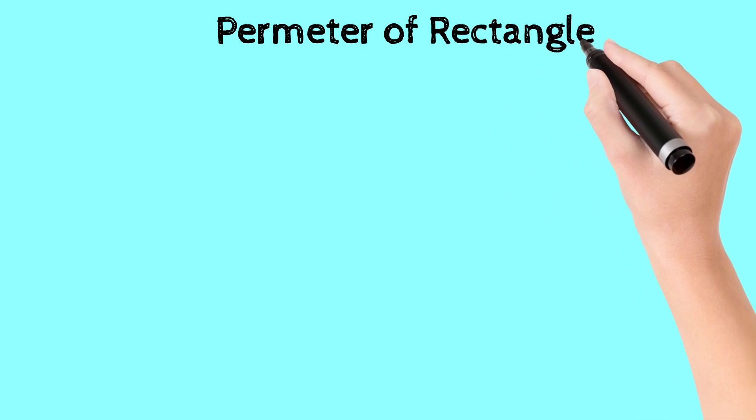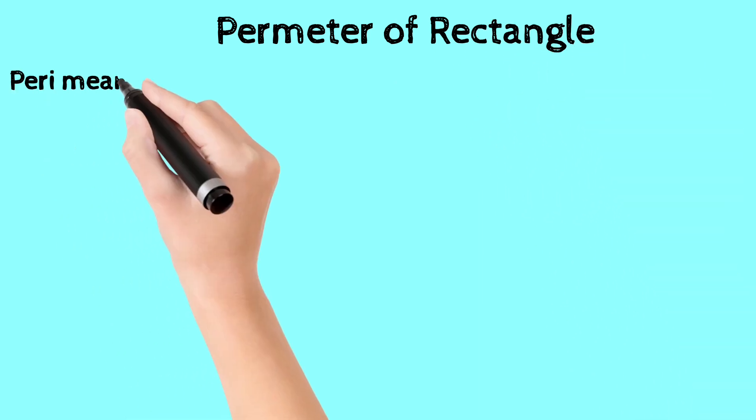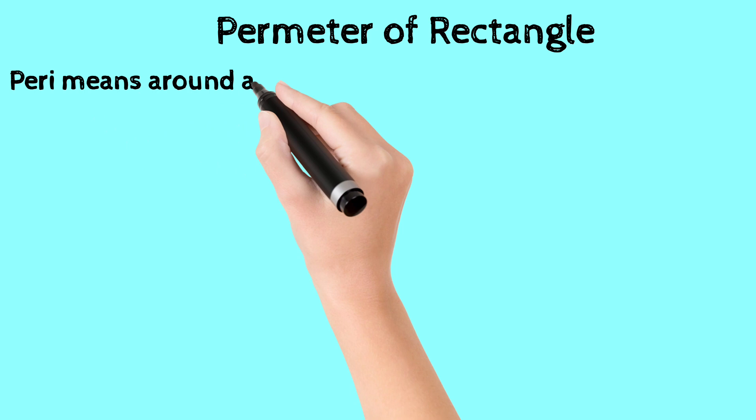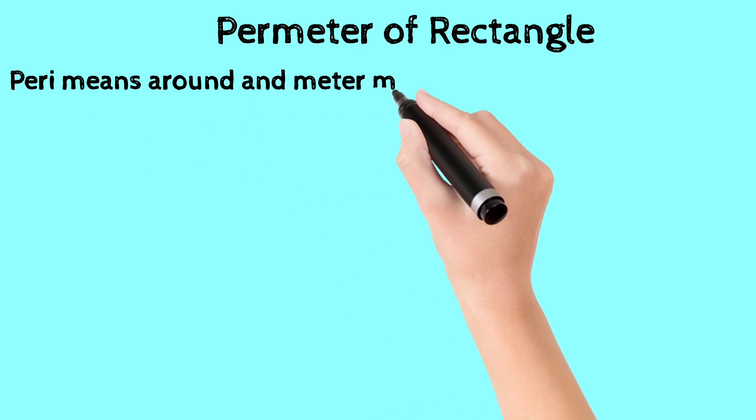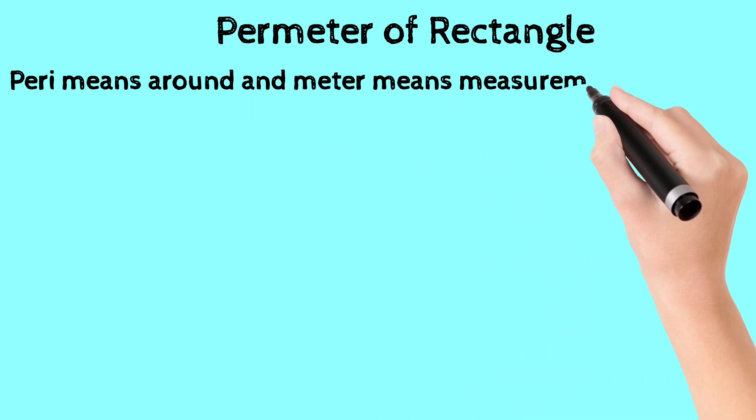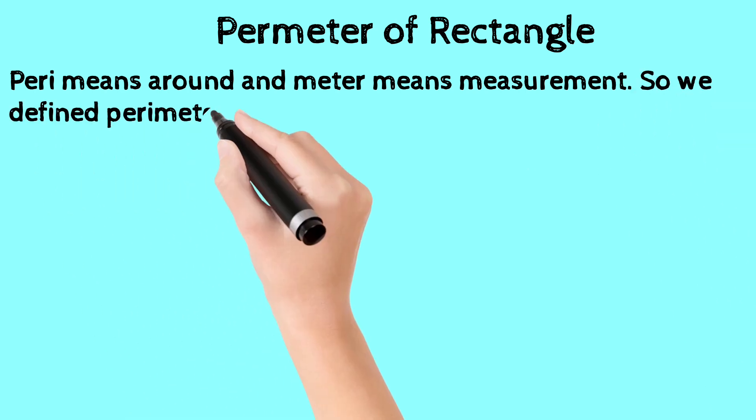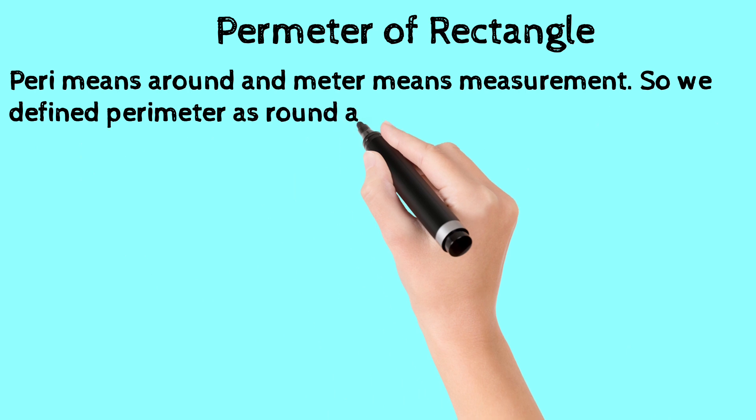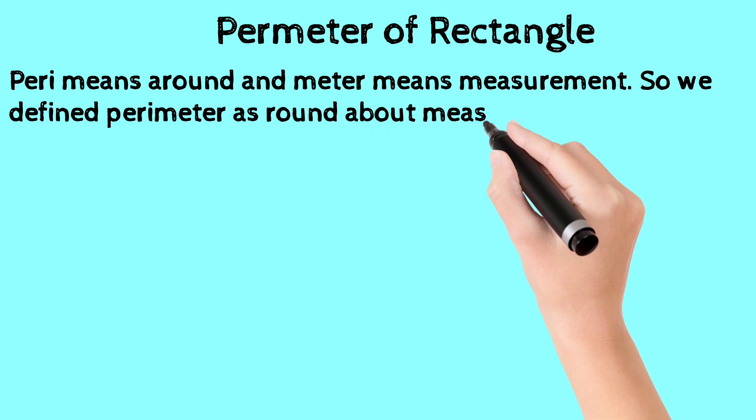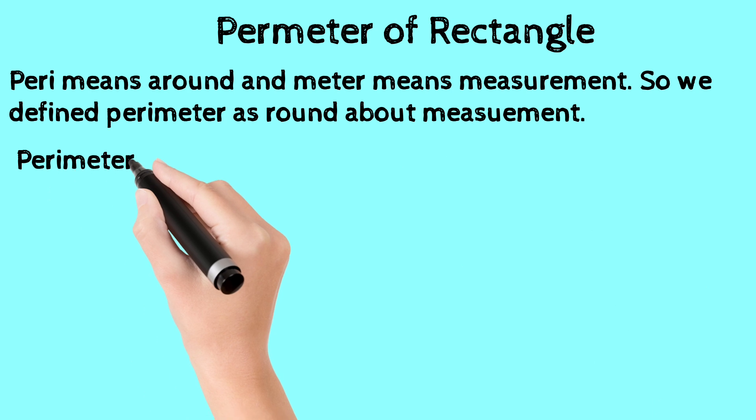Now we find the perimeter of a rectangle. First, see its definition. Peri means around and meter means measurement. So we define perimeter as the measurement around a figure.